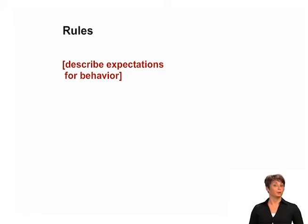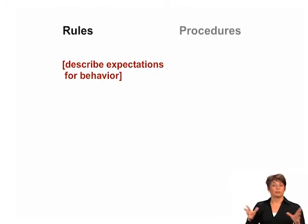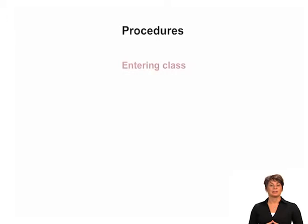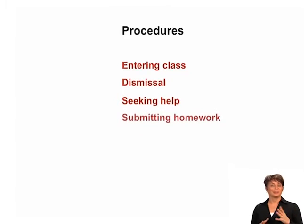Keep the number of rules minimal in a classroom — three to five is a good rule of thumb. When students know a teacher's expectations for good behavior, there are fewer class disruptions and learning time is maximized. Classroom procedures are instructions that students are expected to follow for specific activities, for example: entering class, dismissal, seeking help, submitting homework, and transitioning.